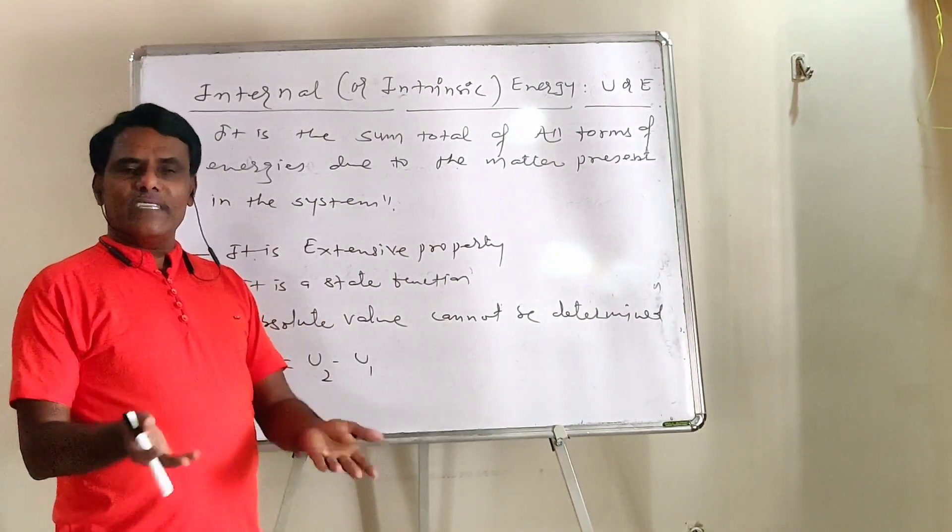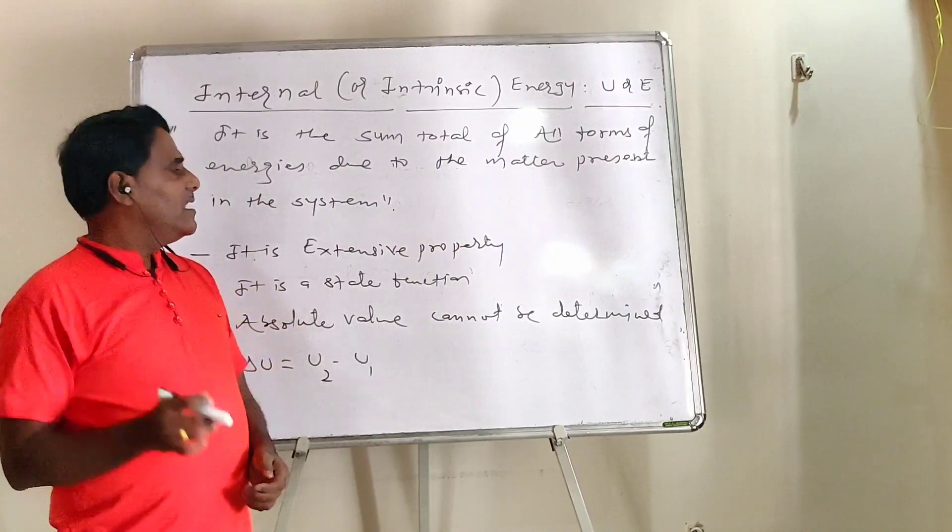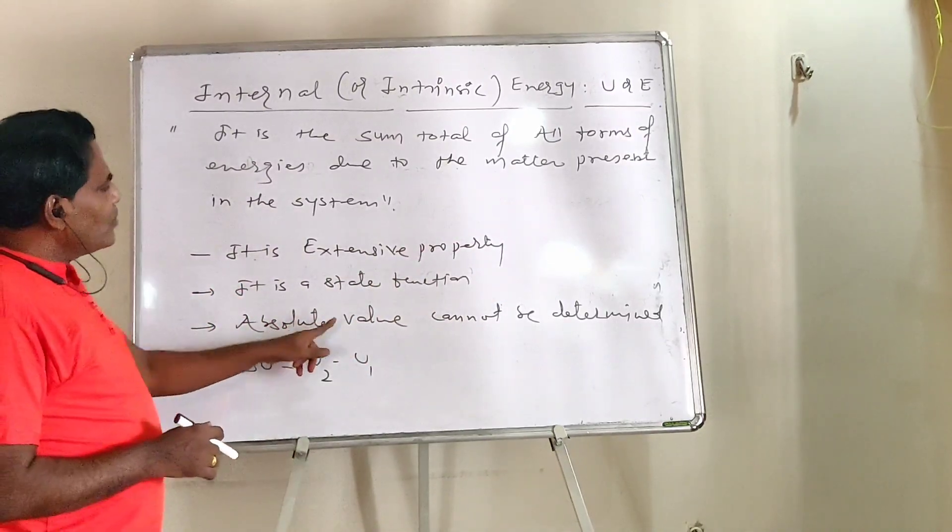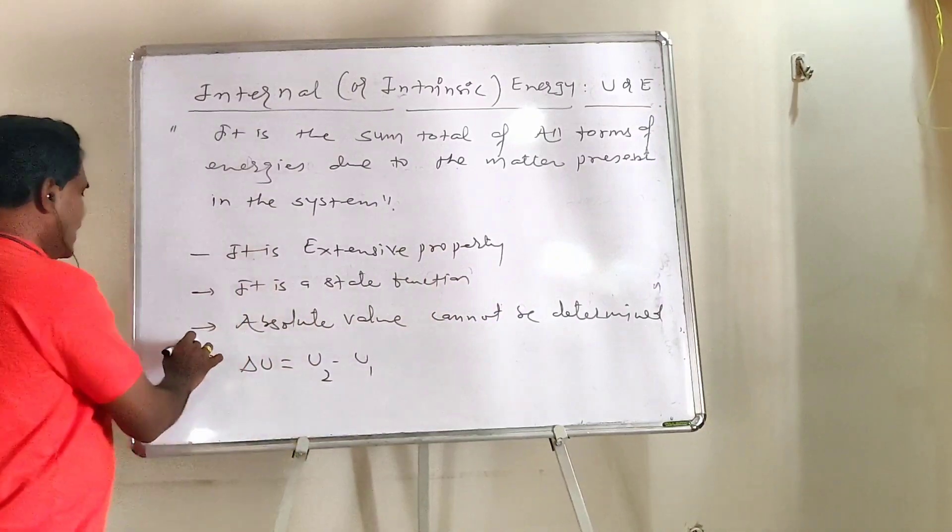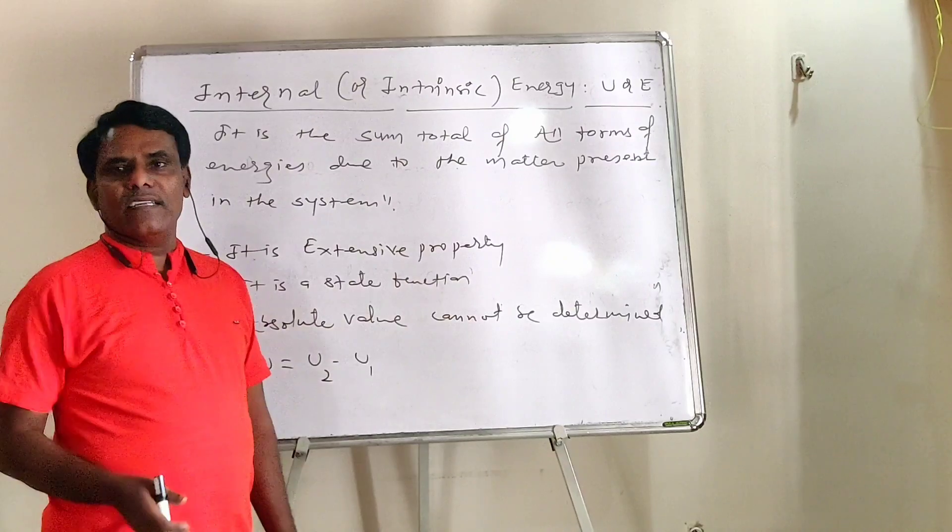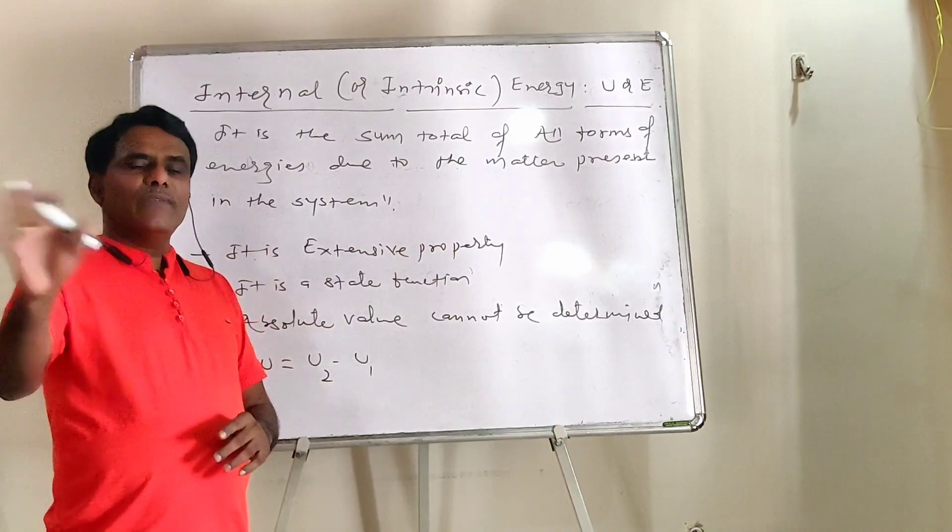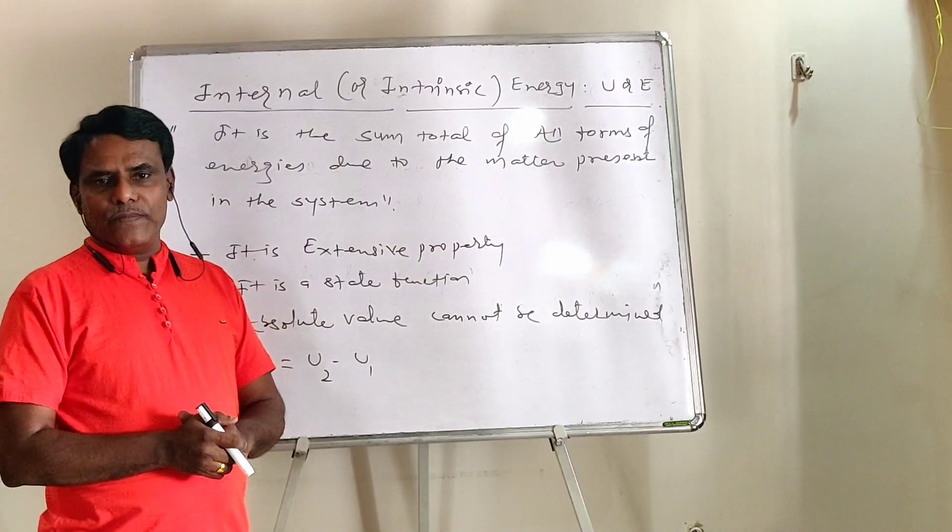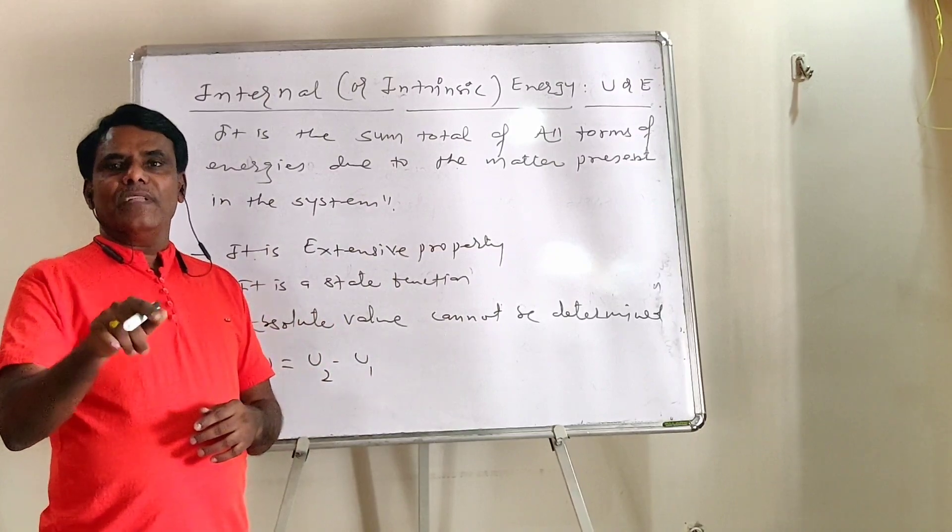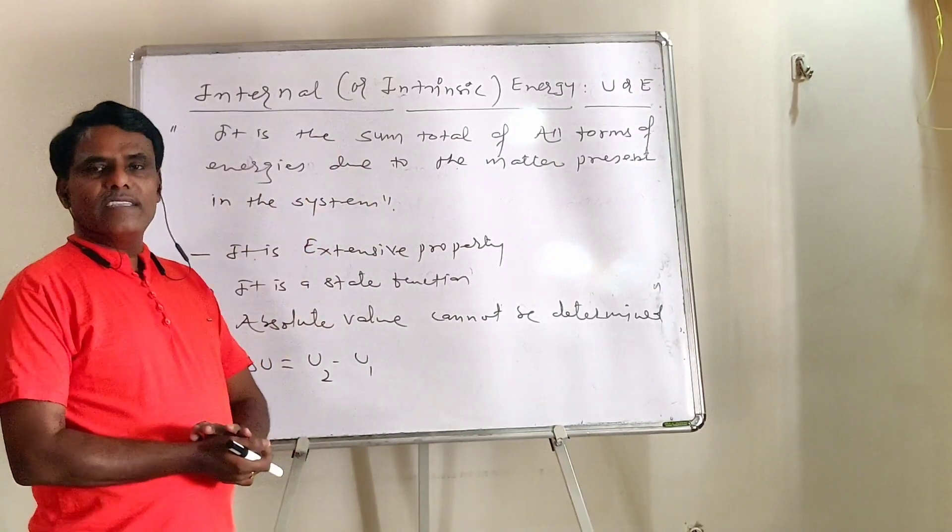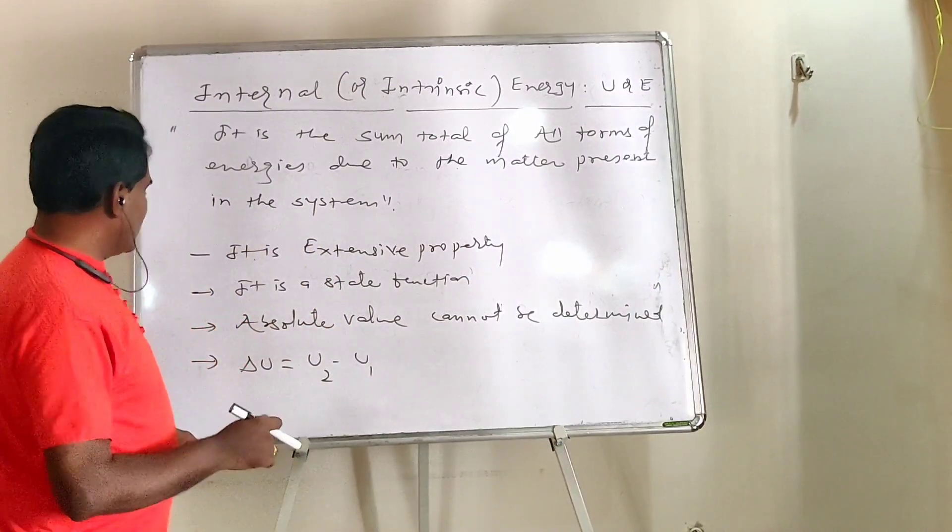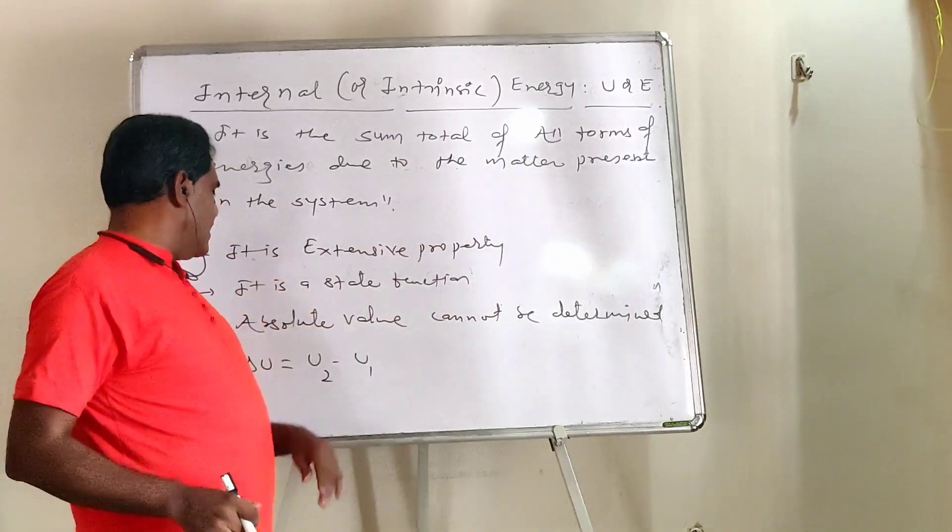Internal energy is a state function, means change in internal energy depends upon only initial and final state of the system. Its absolute value cannot be determined. This is a very important point. Exact value, absolute means exact. Exact value of internal energy can never be calculated. Because it is impossible to calculate all forms of energies simultaneously. The exact value of every form at one particular time is impossible to determine. So absolute value, exact value, cannot be determined.